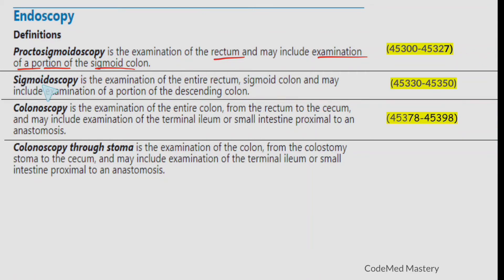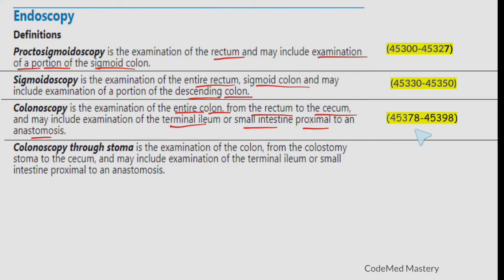Sigmoidoscopy is the examination of the entire rectum and sigmoid colon, and may include examination of a portion of the descending colon; code range 45330 to 45350. Colonoscopy is the examination of the entire colon from the rectum to the cecum, and may include examination of the terminal ileum or small intestine proximal to an anastomosis; code range 45378 to 45398.